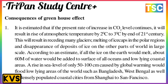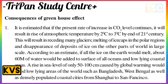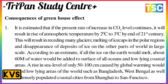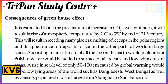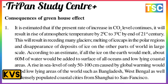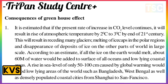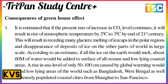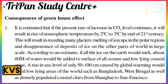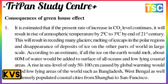This will result in the receding of many glaciers, melting of ice caps in the polar region, and the disappearance of ice deposits in other parts of the world on a large scale. According to estimates, if all the ice on Earth were to melt, about 60 meters of water would be added to the surface of all oceans and low-lying coastal areas.